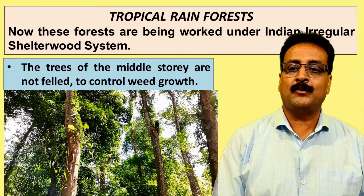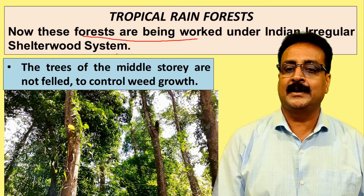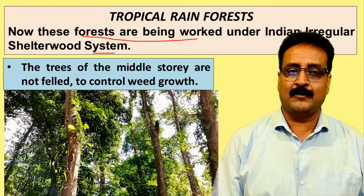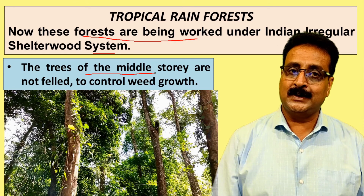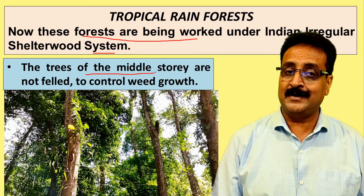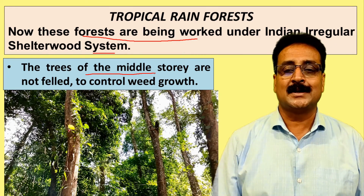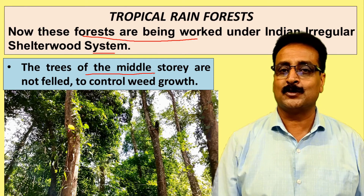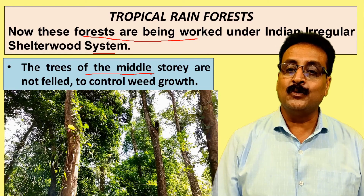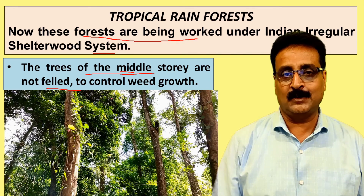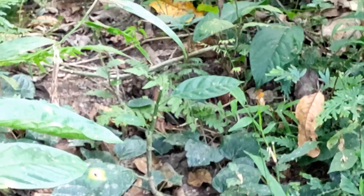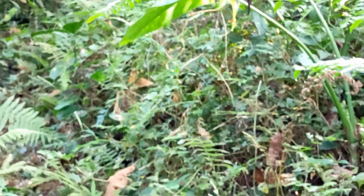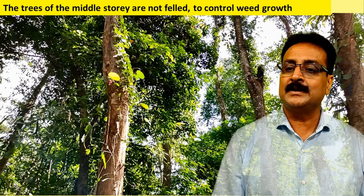These forests now work very nicely under the Indian Irregular Shelterwood System in natural producing areas of tropical rainforest. Trees of the middle stories are not felled here. In tropical rainforest, soil fertility is very important because heavy rainfall leaches nutrients beyond the reach of tree roots. We retain middle stories to control weed growth and prevent leaching if heavy uniform felling or opening of the overwood occurs.